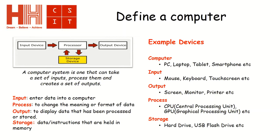The output side of it is where we display the data that has been processed or stored. So that mouse click that we did, which was set to open up a file, the output would be that file being displayed on the screen. That's why a screen or monitor is classed as an output device.